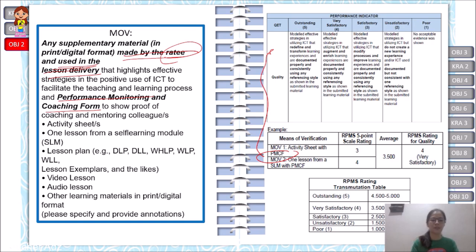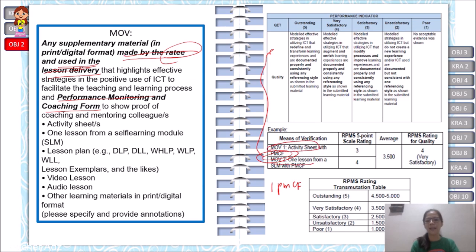For Objective 2, two MOVs are required: MOV 1 is an activity sheet with PMCF, and MOV 2 is one lesson from an SLM with PMCF. However, it was confirmed with the central office that one PMCF can serve for both MOVs in this objective — one PMCF covering both the activity sheet and the one lesson from the SLM is acceptable, as long as it targets Objective 2 and shows how you coached colleagues on this objective.